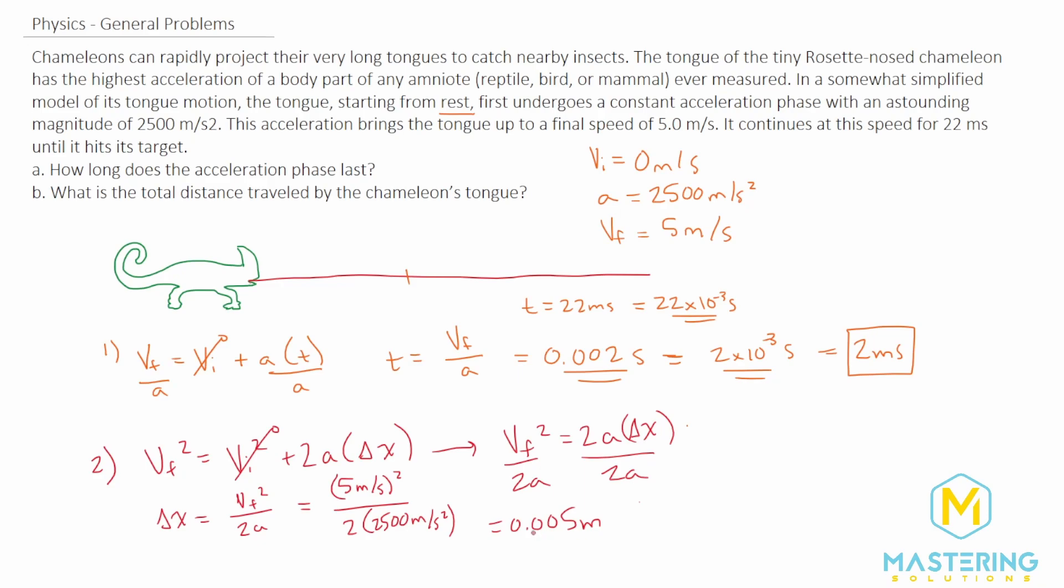We can convert that: 0.005 meters is the same as 5 times 10 to the negative 3 meters, or 5 millimeters. So here are the answers: the total distance traveled was 5 millimeters and the total time for the acceleration phase was 2 milliseconds.